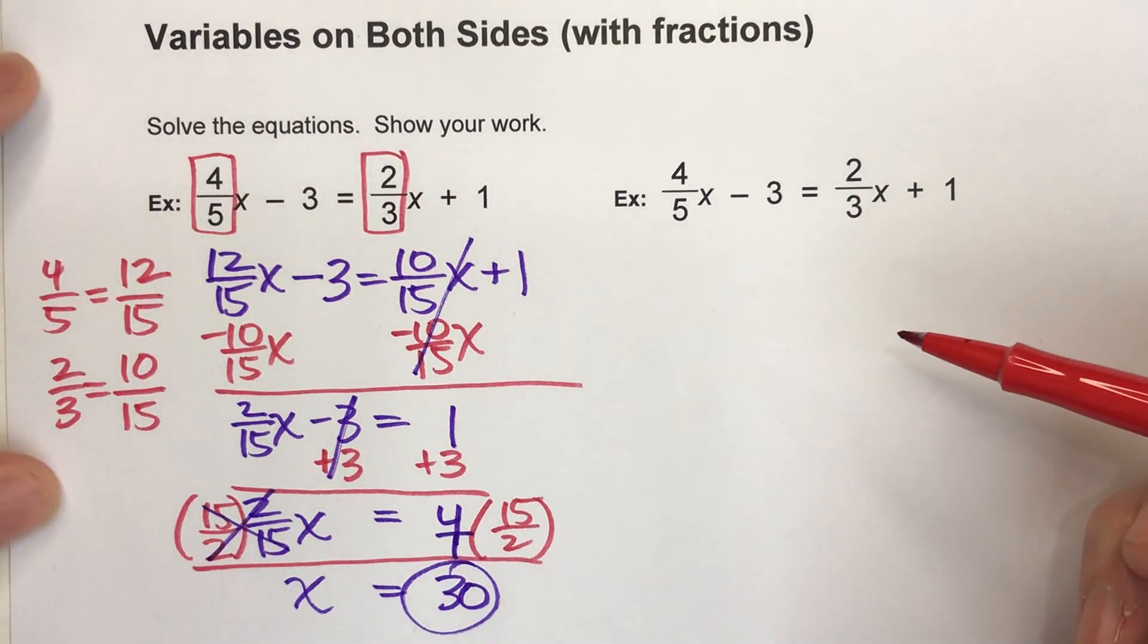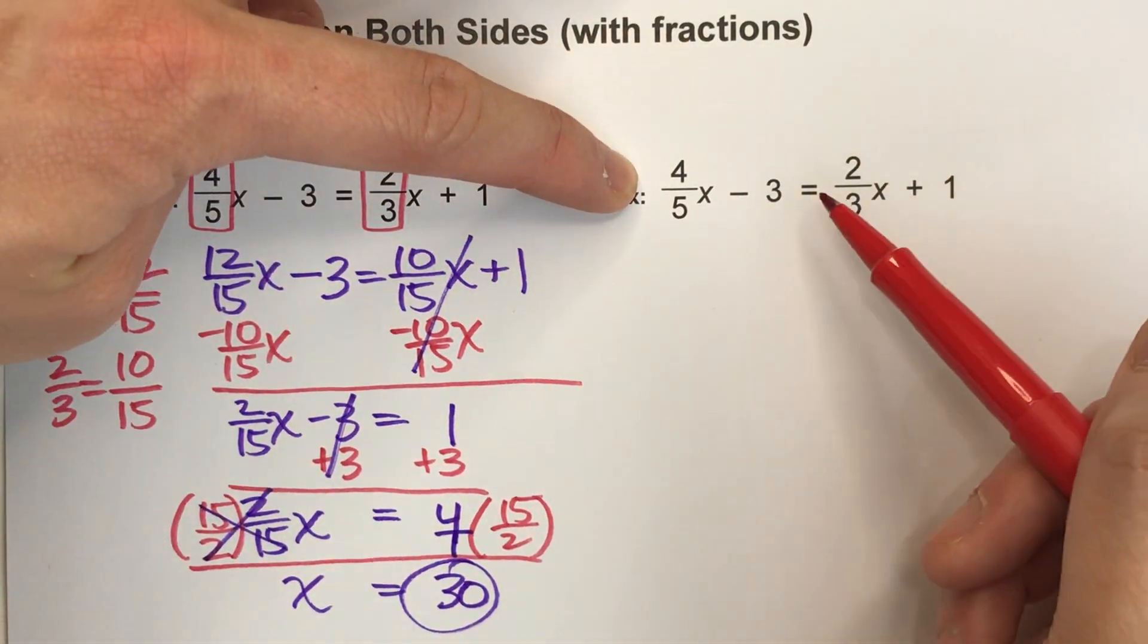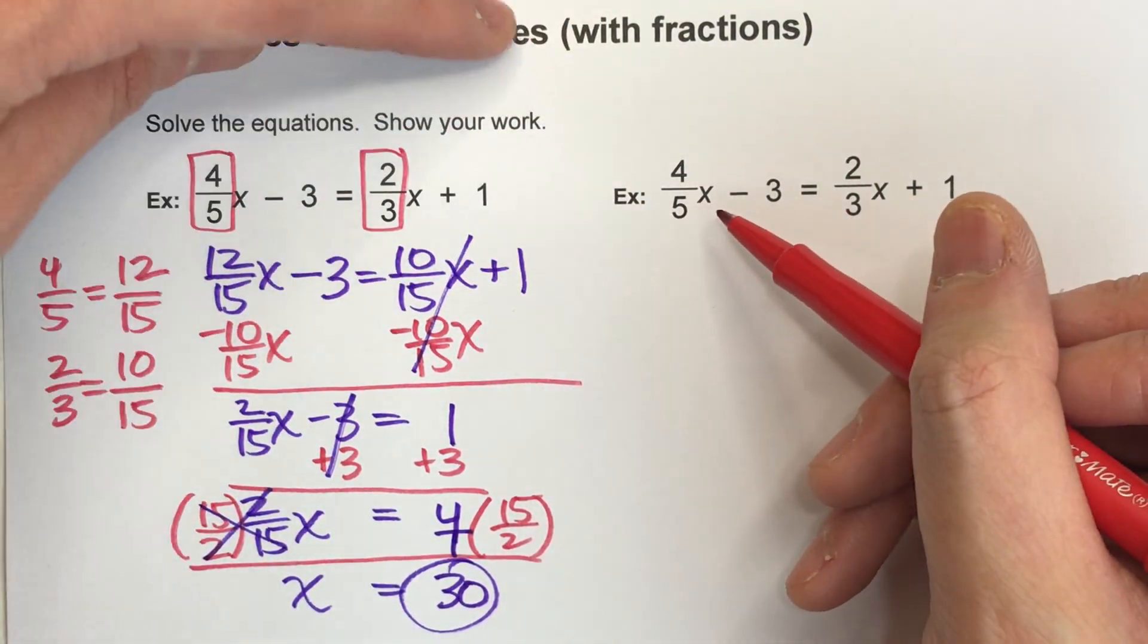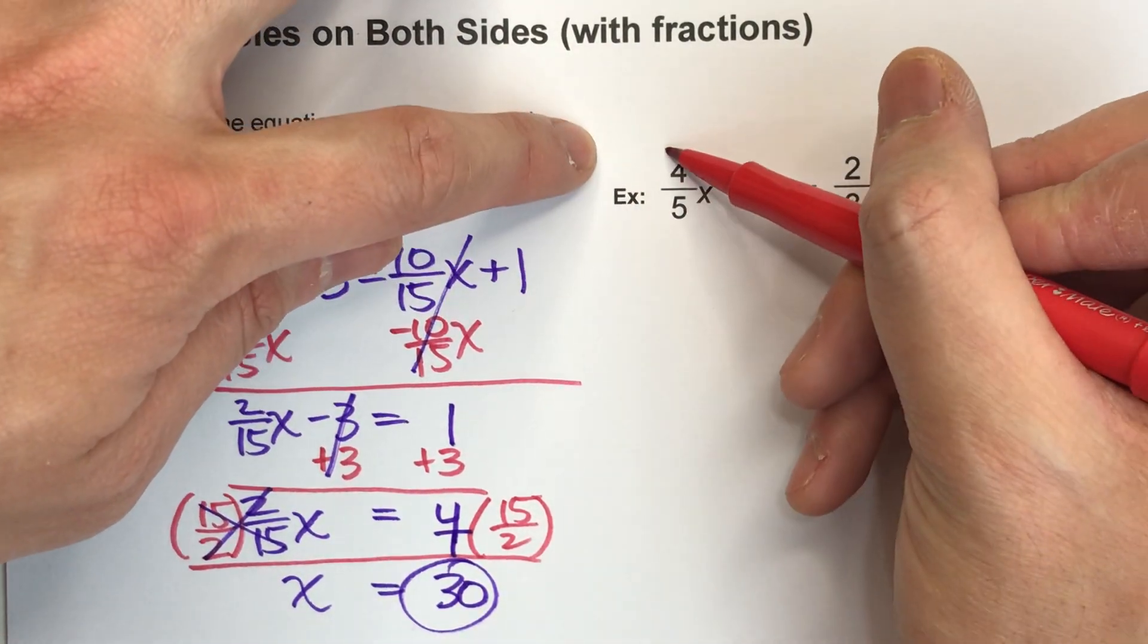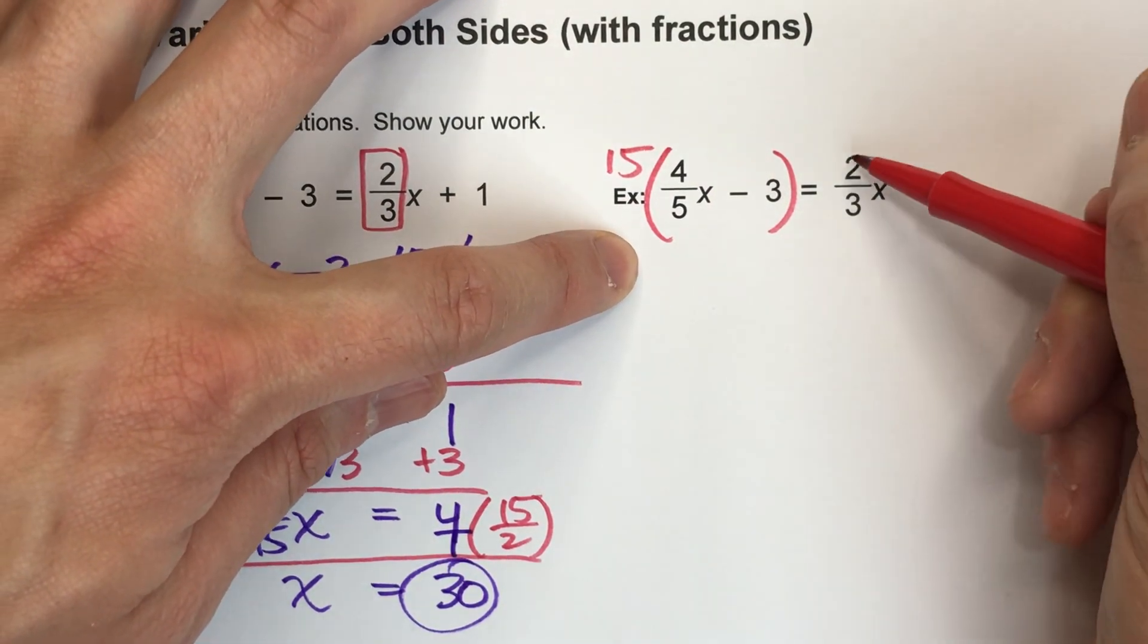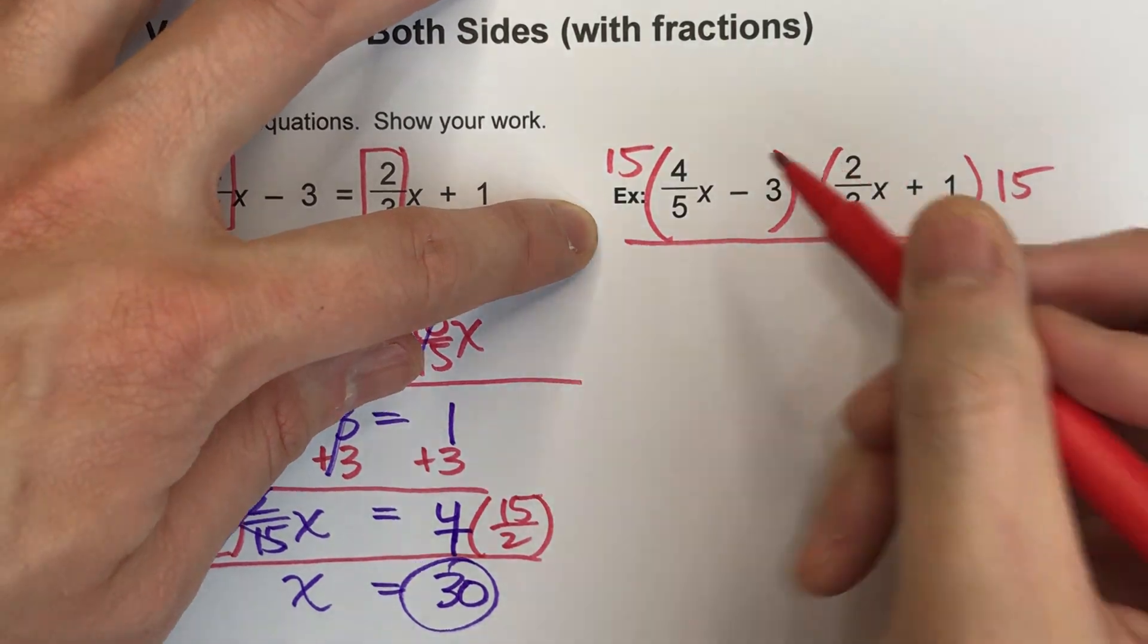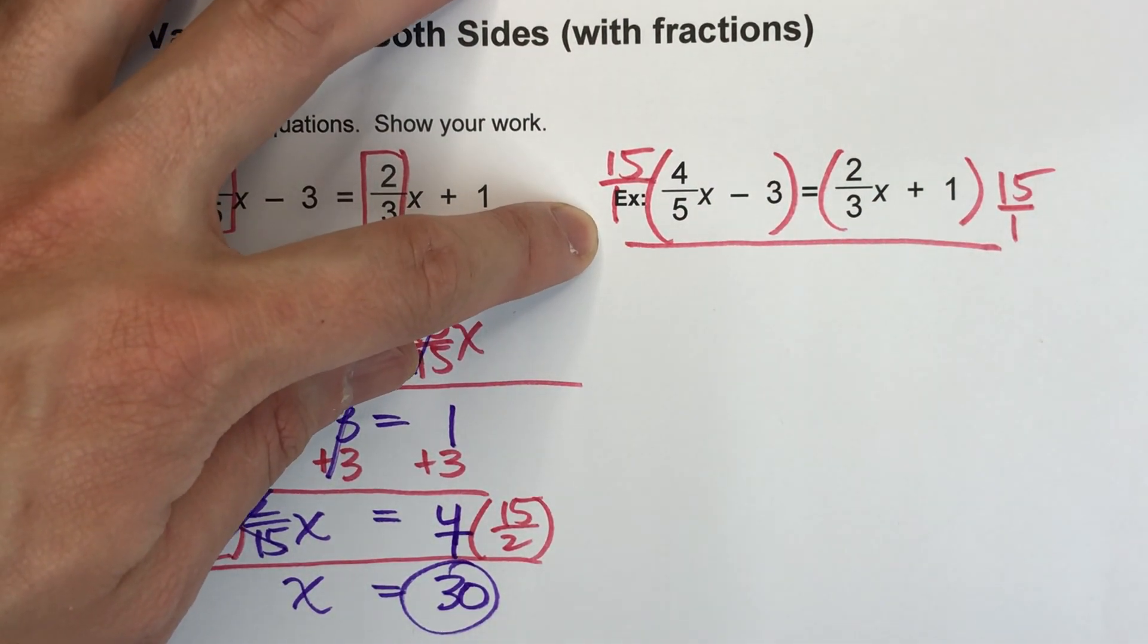So in this equation, I've got two fractions. The first thing I'm going to do is multiply both sides by whatever the common denominator would be. And we already know from the previous problem that the common denominator here is 15. So I'm going to multiply this whole side by 15. But what I do to one side, I have to do to the other side. I'm going to put 15/1, since I'm multiplying by fractions, just to make things simpler.